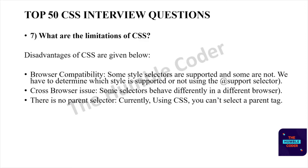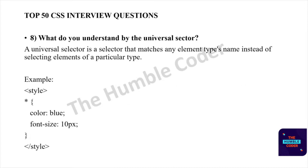What do you understand by the universal selector? A universal selector is a selector that matches any element type by name, instead of selecting elements of a particular type. You can see an example of a universal selector below.